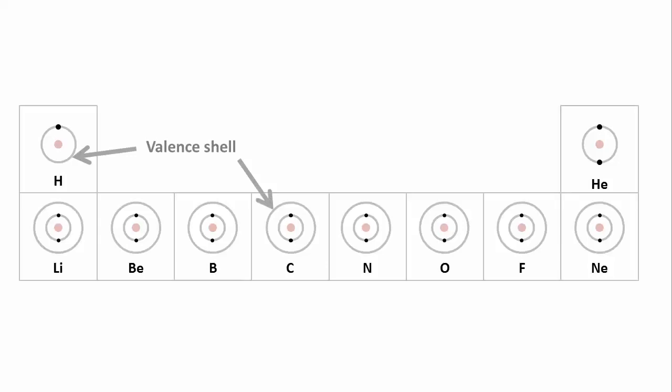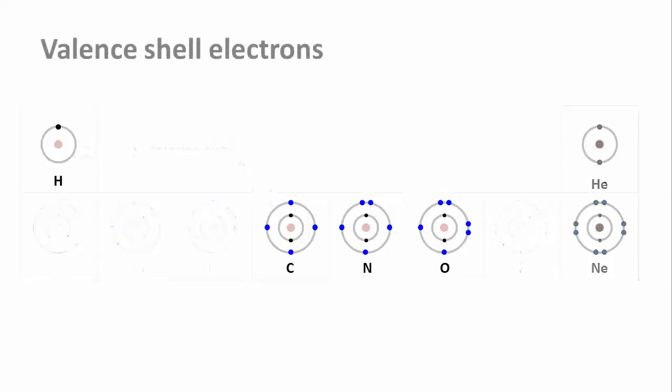The second shell has room for four electron pairs, but as you can see, the electrons like to stay single for as long as they can. All atoms are the most stable if their valence shell is filled with a maximum number of electrons. For hydrogen, that means it needs one more. For carbon, nitrogen, and oxygen, it means four, three, or two electrons are missing for these atoms to be as stable as neon.